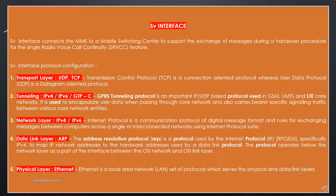Third is the network layer where IPv4 or IPv6 is used — Internet Protocol is a communication protocol of digital message format and rules for exchanging messages between computers across single or interconnected networks using Internet Protocol suite. Fourth is the data link layer where ARP is used — the Address Resolution Protocol (RFC-826) specifically IPv4, maps IP network addresses to hardware addresses used by a data link protocol; the protocol operates below the network layer. Fifth is the physical layer where Ethernet is used — a local area network set of protocols serving the physical and data link layers.